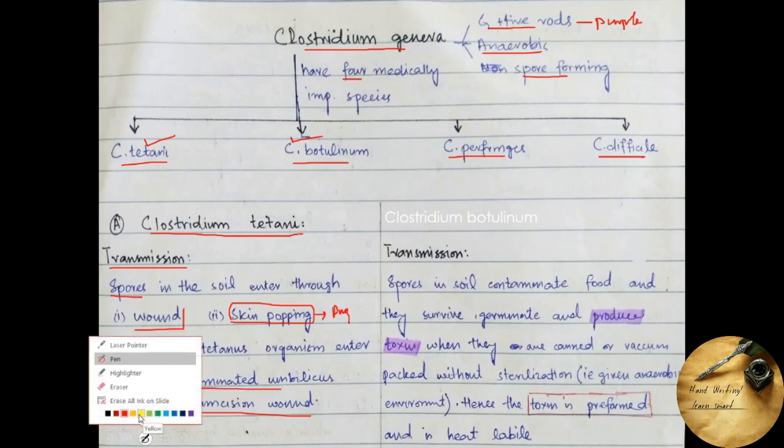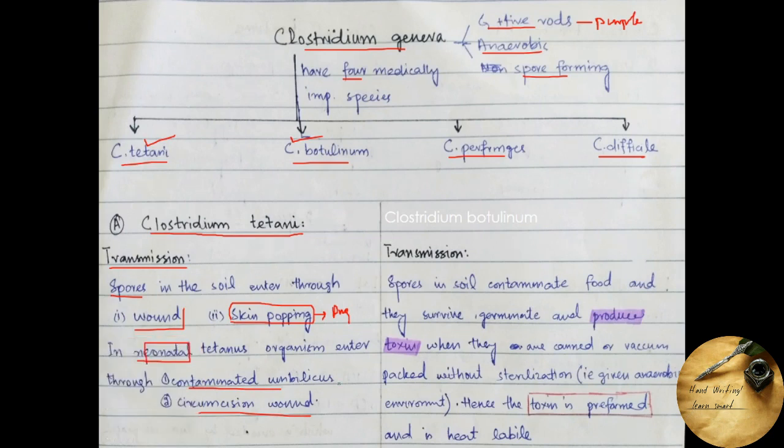Now coming towards the epidemiology of Clostridium botulinum, the spores are found in soil which contaminate food, and when this food is canned or vacuum-packed, the spores survive, germinate, and produce toxin outside the body. It means that they survive in anaerobic environment. Hence, the toxin is preformed and is heat labile.